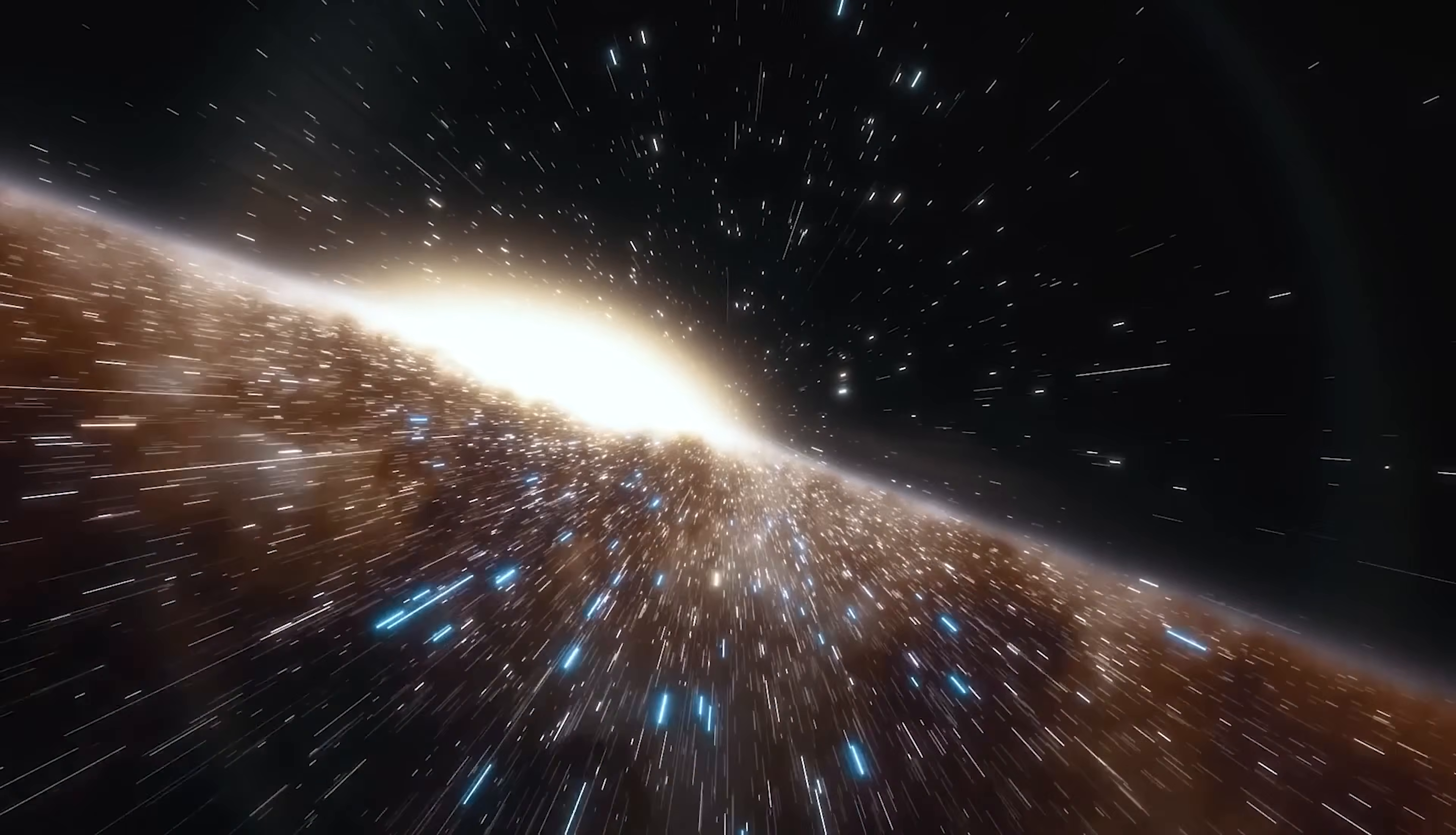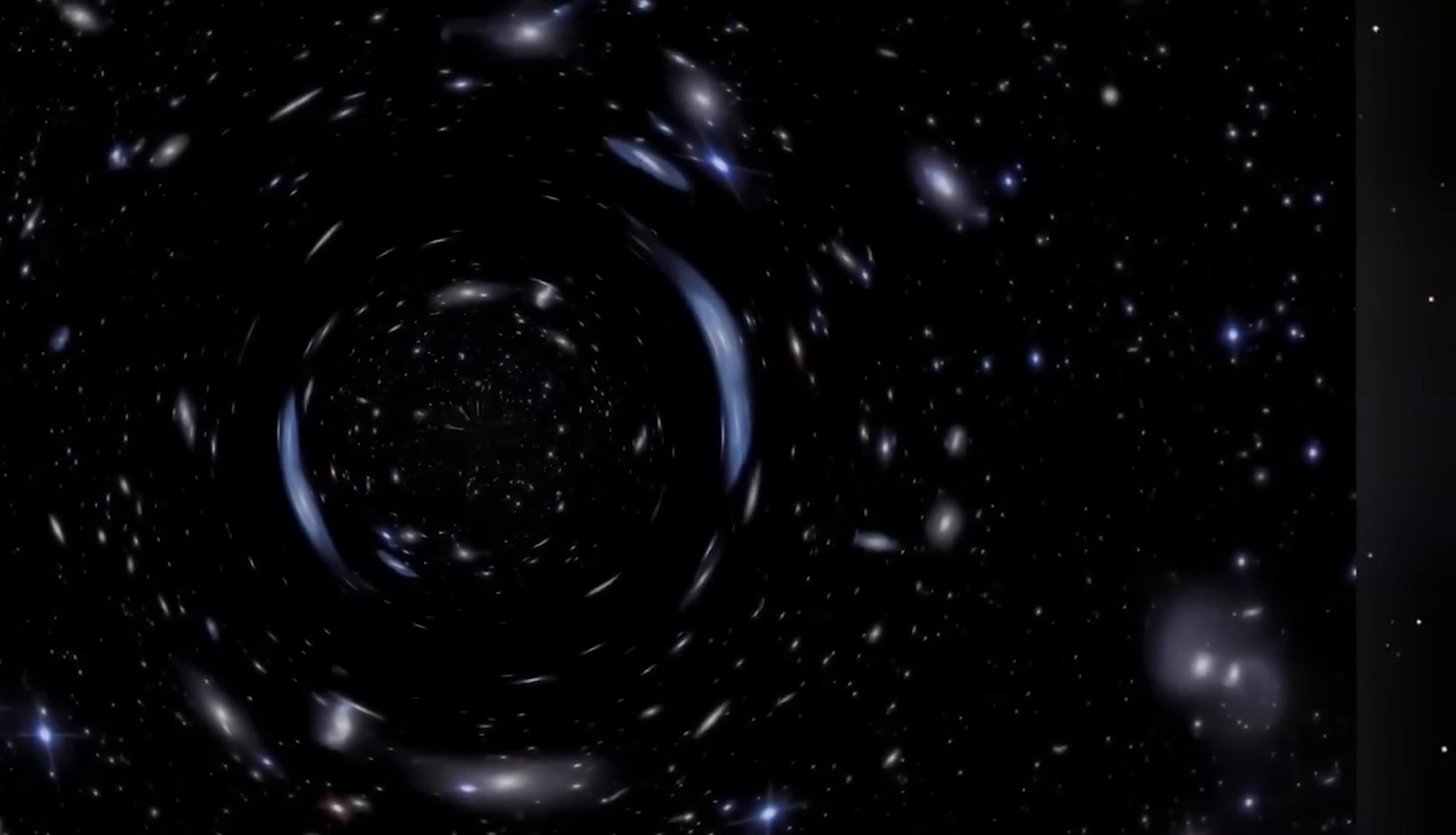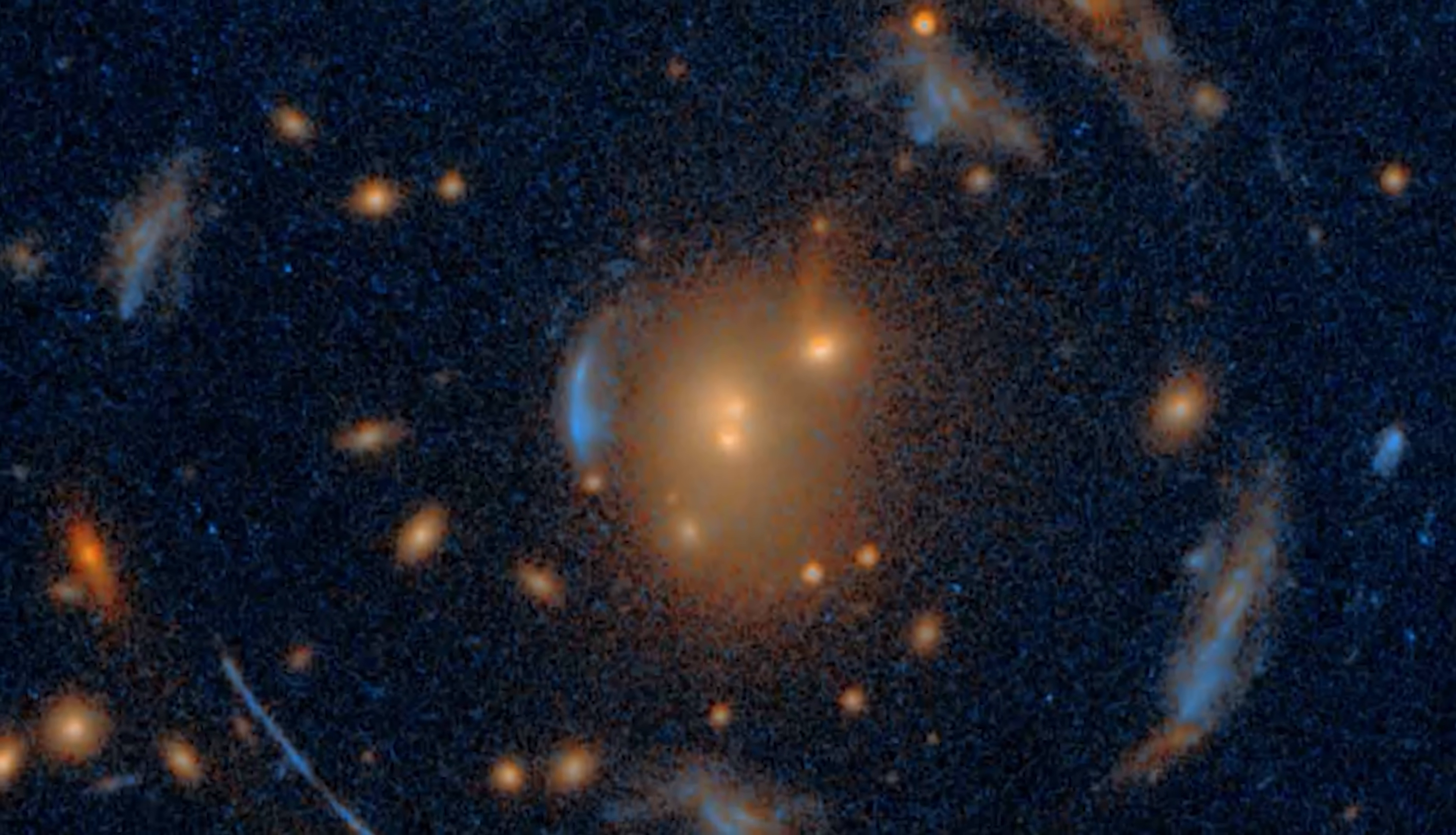But in this case, its light passed directly behind a foreground group of galaxies, whose combined gravity acted as a natural lens. This gravitational lens magnified and split the galaxy's image, creating the classic Einstein cross pattern.